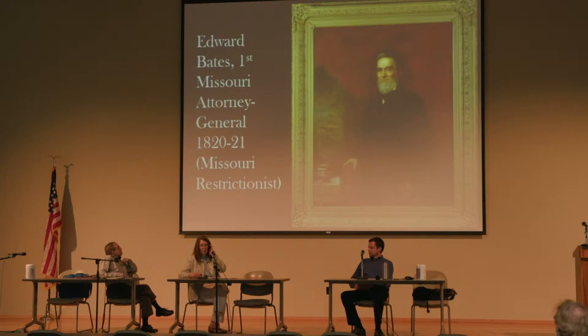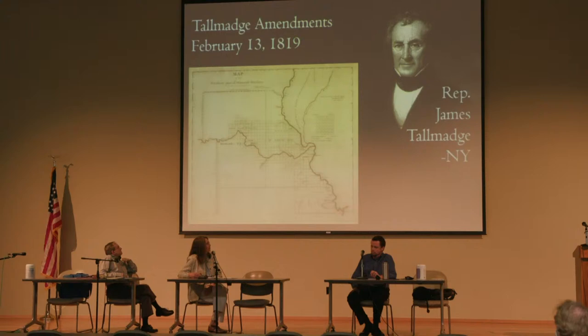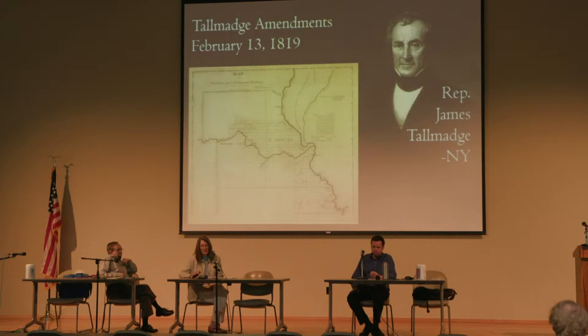Someone closer to home — even though Missouri applied as a slave state, there were restrictionists here in the state. One of them was Edward Bates, who served as Missouri's first attorney general — you may know him later as a member of Lincoln's cabinet — and he too was a restrictionist. James Talmadge, a representative from New York, was also a restrictionist. They wanted to see slavery stopped — no more slavery into any new territory.